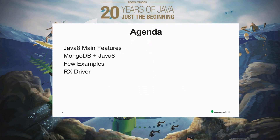We're going to be looking into the main features of Java 8, how we can integrate with MongoDB, a few code snippet examples that I prepared for this talk, and also talk a little bit about the reactive driver that we just recently — a few months ago — released, which might be very useful if you're building asynchronous or reactive applications on top of Java 8.